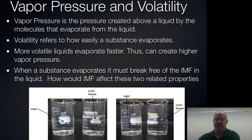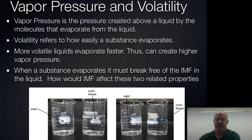Here are two pictures showing a starting point with water and cyclohexane side by side, and then water and cyclohexane again after a certain amount of time. Color is added so you can see the water levels more easily. Initially they're both the same, but after some time the water has evaporated a little, while the cyclohexane has definitely evaporated more. So the substance with weaker intermolecular forces evaporates faster — you get more vapor pressure and more volatility, giving us that inverse relationship.